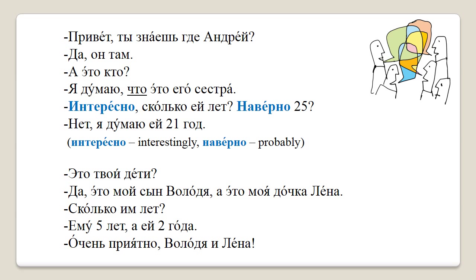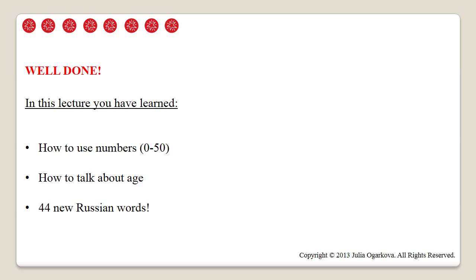As usual, please feel free to pause and rewind any section of this lecture in order to practice your pronunciation. Well done! You have worked really hard in this lecture and you have done really well. You've learned how to use numbers 0 to 50 and how to talk about age. Including the additional vocabulary in the supplementary materials, you have familiarized yourselves with 44 new Russian words. Remember to download the supplementary material, which contains additional vocabulary and a test-yourself file with exercises. Also, please continue working on your personal profile started in lecture 5 — based on this lecture, you can now add information about your age and phone number. Thank you for today and speak to you soon.